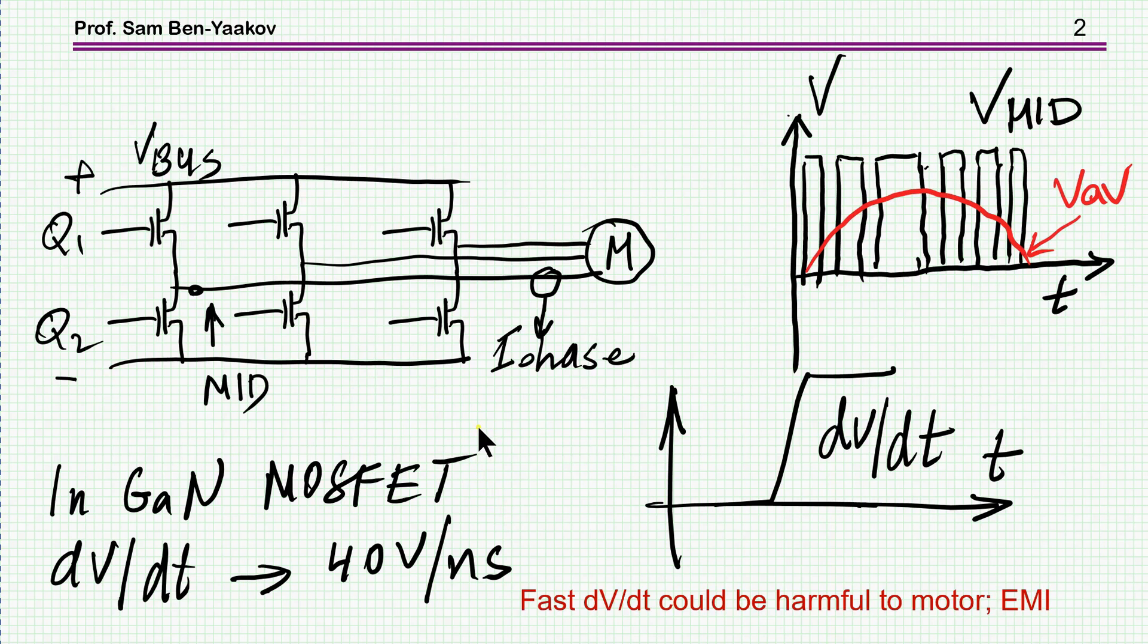What is the problem we are addressing? Here I'm showing a three-phase inverter that feeds a motor with PWM pulses coming out of each half bridge. The transitions of these pulses have some dV/dt and if we use a fast transistor like GaN MOSFET, this dV/dt could be fairly high. It could be in the range of 40 volts per nanosecond and actually could be even faster than that.